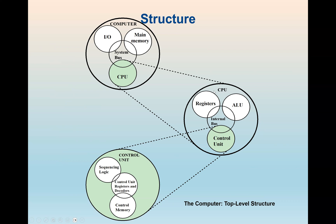We also have a special element called the program counter, which normally points to the next instruction that the CPU will execute. Within the control unit, we also have the sequencing logic, the control unit registers and decoders, and control memory. The computer normally operates through fetch, decode, and execute. The CPU accesses data from memory — either cache or main memory — then decodes it using the control unit before executing the program.